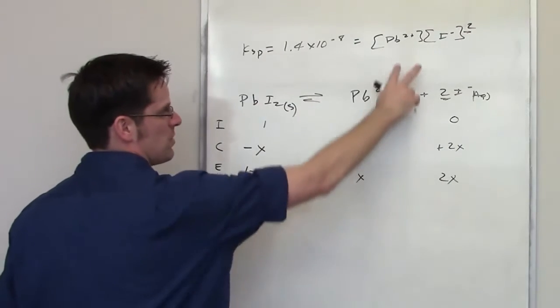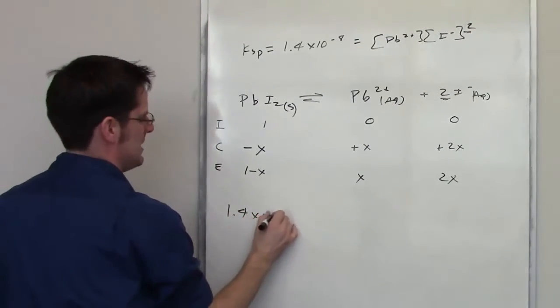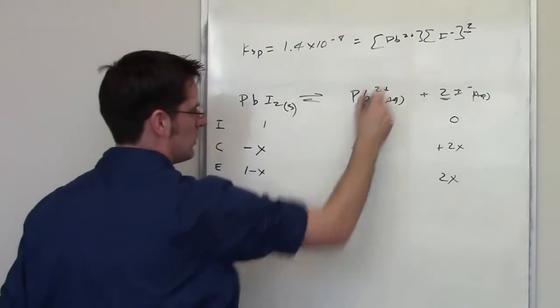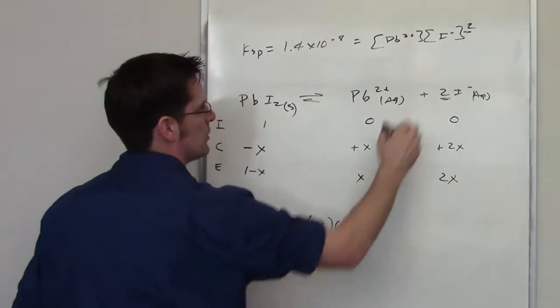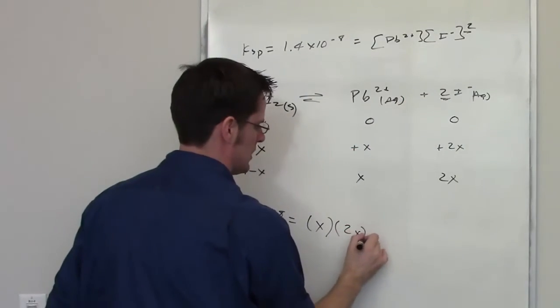I have to take these values and throw them into their corresponding locations. 1.4 times 10 to the negative 8 is going to be equal to the equilibrium concentration of lead 2+, which is x, multiplied by the equilibrium concentration of iodide, which is 2x squared.